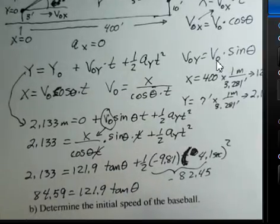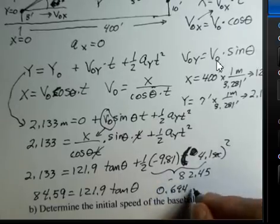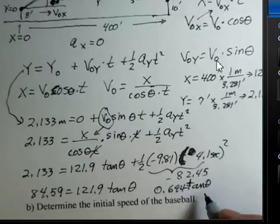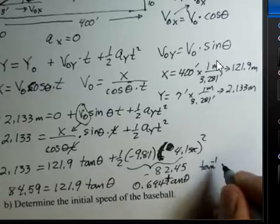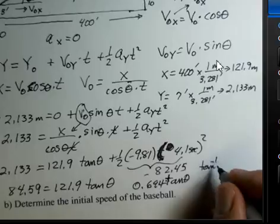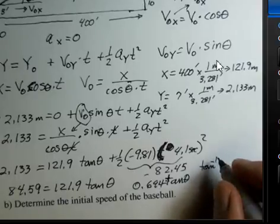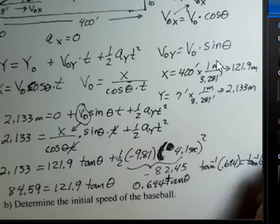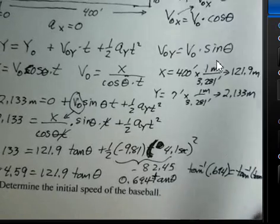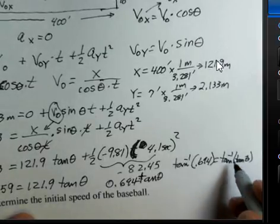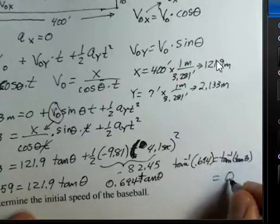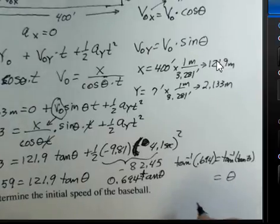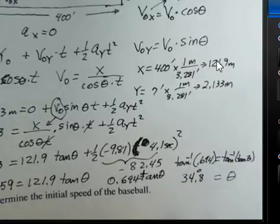Divide both sides by 121.9. We find 0.694 is equal to tangent theta. I'm crowding a little bit here. I now have to take inverse tangent of both sides. So tangent minus 1 is the symbol. It's not 1 over tangent, but it's a special symbol, inverse tangent. It's not a power, it's a notation. 0.694 equals inverse tangent of tangent theta. And on the right side, the inverse tangent and tangent functions cancel, so I just get theta. Put your calculator in degree mode and process the inverse tangent function on 0.694. When you do that, you get 34.8 degrees. So that's the launch angle for the ball.